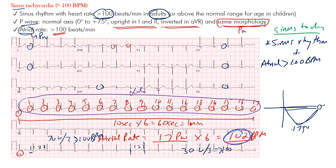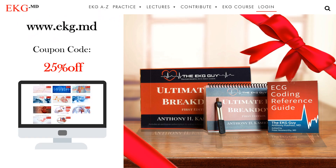To recap: sinus tachycardia is sinus rhythm with a rate over 100 beats per minute. Look for those P waves, make sure sinus rhythm is present — go back to that lecture if you want to understand why we see what we see in the normal conduction system — and confirm an atrial rate over 100 beats per minute. Hopefully that makes sense. That's the end of this lecture; I hope you learned something.